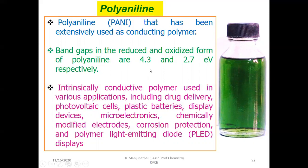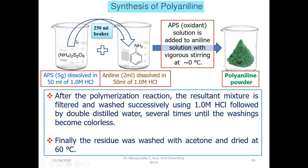For the synthesis of polyaniline, you have to take two beakers of about 250 ml each. In both of them, take 50 ml of 1 molar HCl. Now, add 5 grams of ammonium persulfate — this is an oxidizing agent — into one beaker, dissolving it in the HCl.